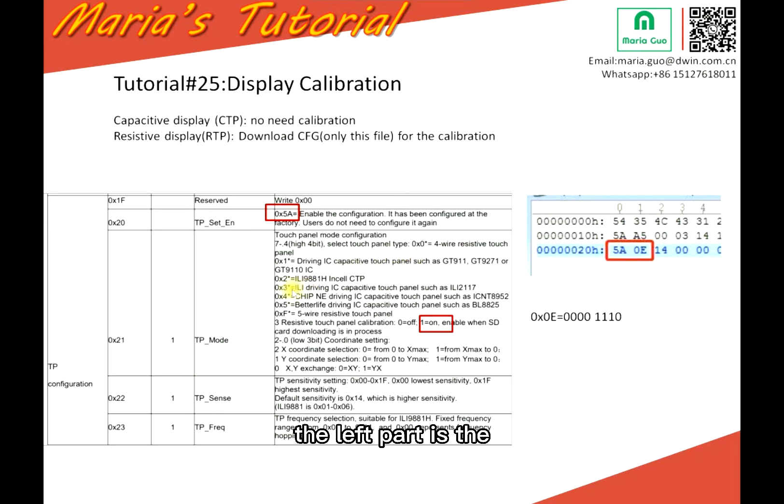The left part is the CFG settings. Here you can see 20 to 22 is the TP configuration. TP means touch panel. And right side is the CFG, 20 to 22.